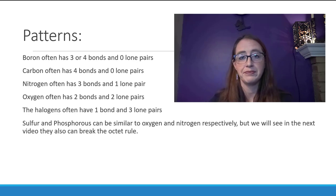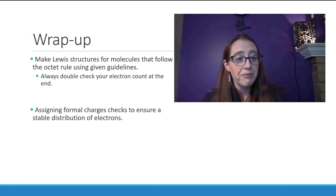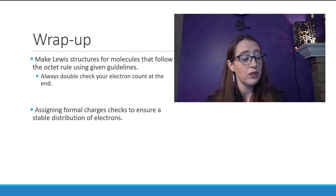So in summary, we make Lewis structures for a molecule that follow the octet rule when we can, when it makes sense. And we start by counting the electrons. Then we make a skeletal structure. We distribute our electrons into double and triple bonds as needed to make sure that everything has an octet.